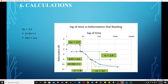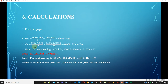With d₅₀ = 6.6 multiplied by least count 0.001 cm, we get the value in centimeters and then convert to seconds. Hdr = (h₀ − d₅₀) / 2, since there is two-way drainage (sandstones at top and bottom). Substituting values gives Hdr = 0.9965 cm. Substituting into the formula gives Cv = 0.000192 cm²/s for the 25 kPa loading.